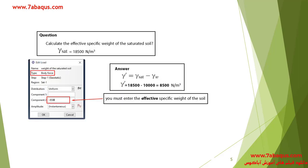A question has been posed in this slide: if the specific weight of saturated soil is 18,500 Newton per cubic meter, calculate the effective specific weight of saturated soil. According to the formula mentioned in the previous slide, we can calculate the effective specific weight of saturated soil, which equals 8,500 Newton per cubic meter.